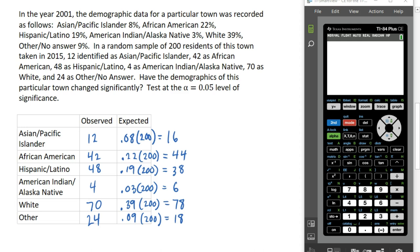The only thing we really need to check here is that we have a requirement that the expected values are all at least 5. Our smallest expected value is 6, so we are okay to do the test. Our test statistic is the chi-square statistic.